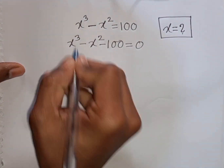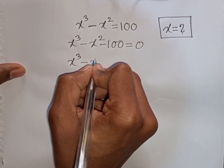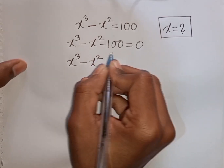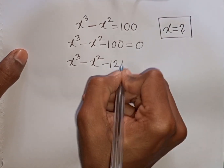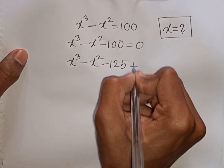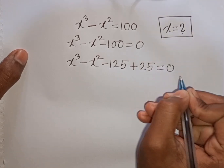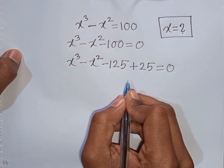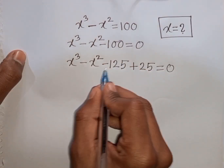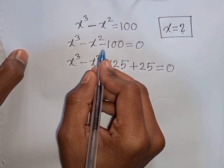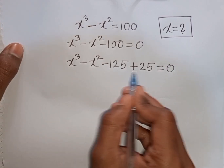Now we have x power 3 minus x power 2. Then minus 100 can be written as minus 125 then plus 25, then is equal to 0. Pay attention here — the nearest cubic number of 100 is 125. So we can write here minus 100 is same as minus 125 then plus 25.